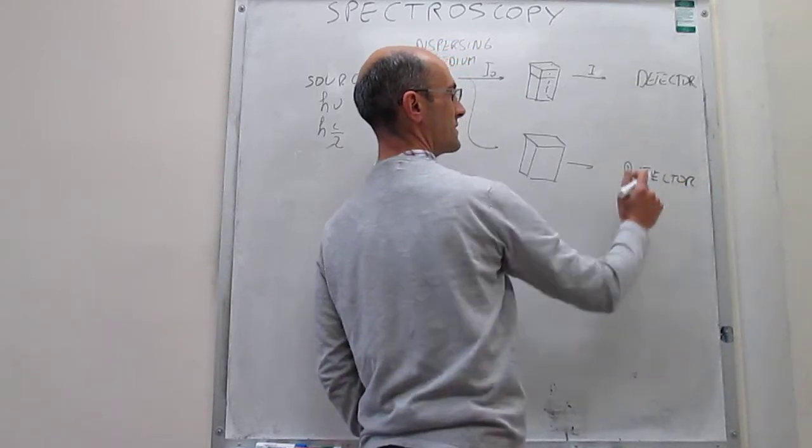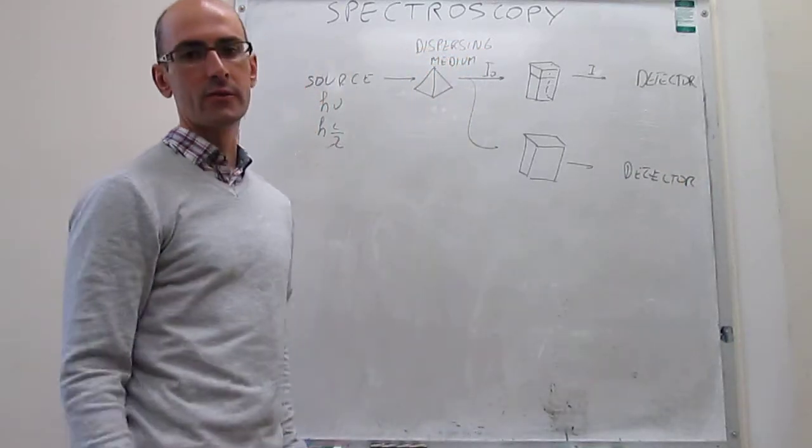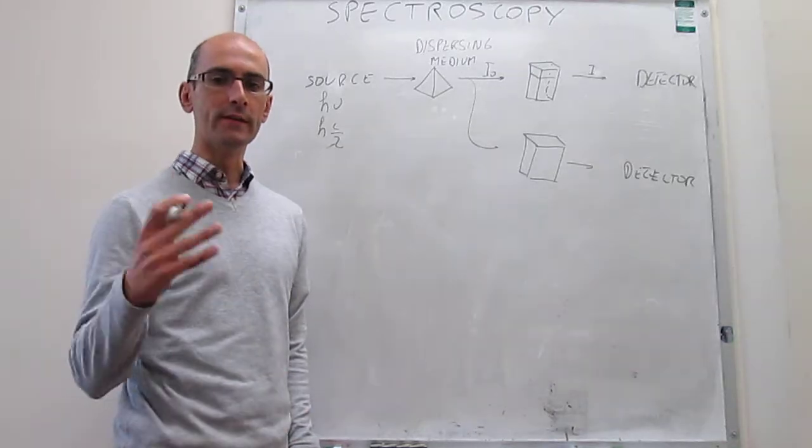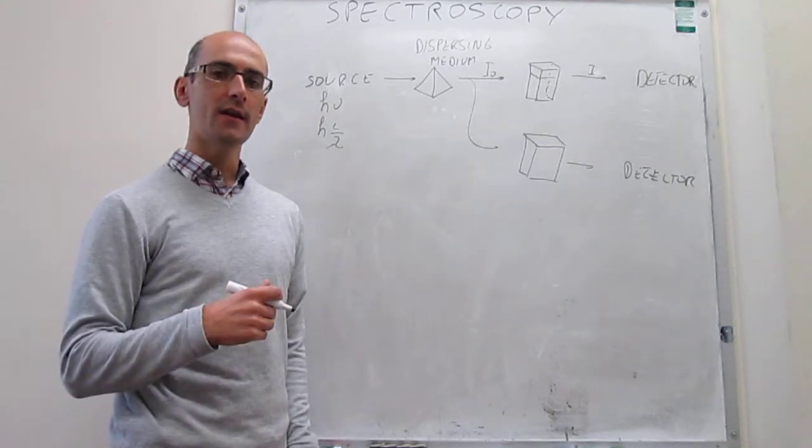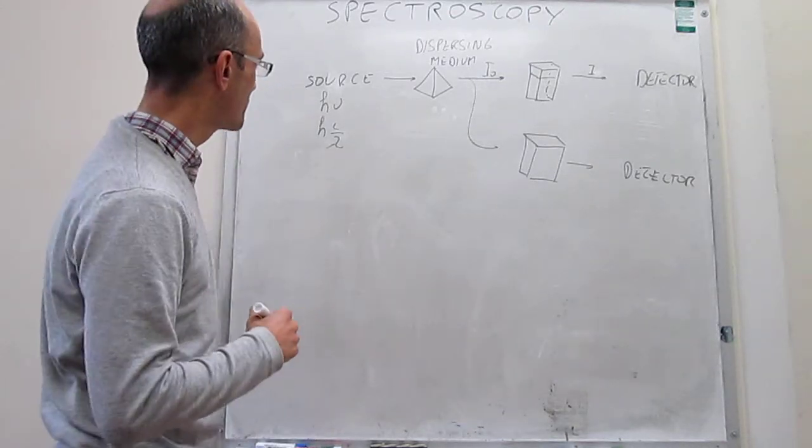You get a comparison of the intensities here. In the sampling, the detector is going to tell you what the difference in I and I₀ are. And from there, you can calculate the absorbance.